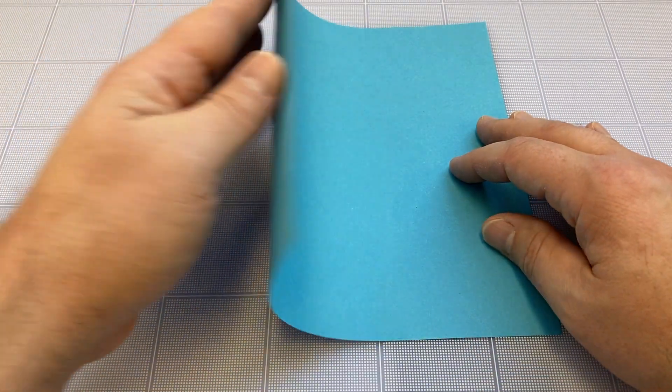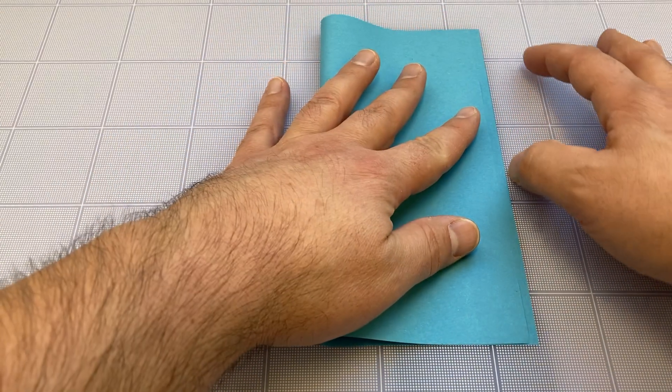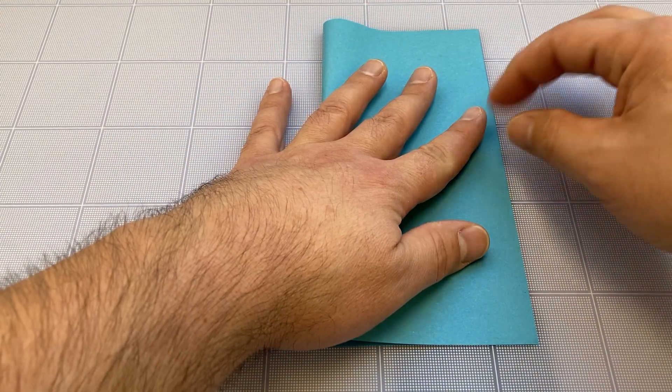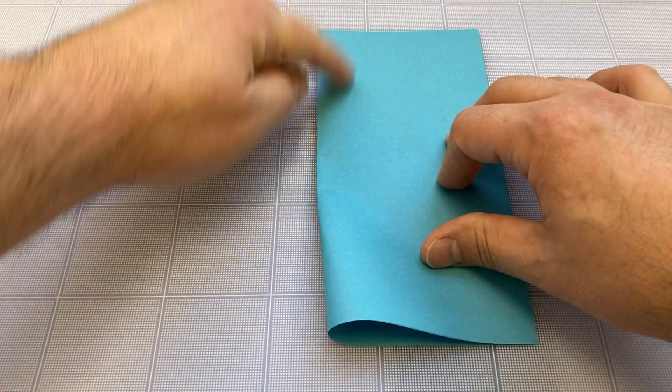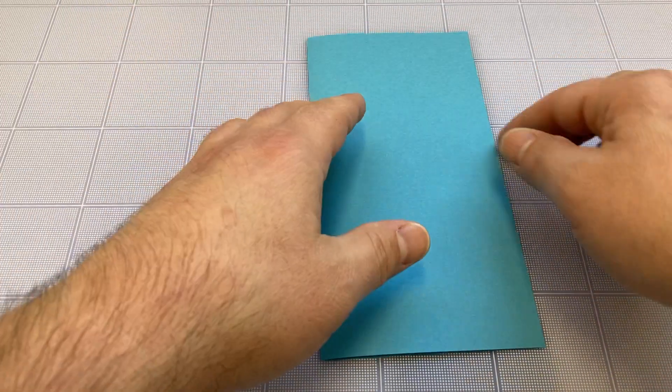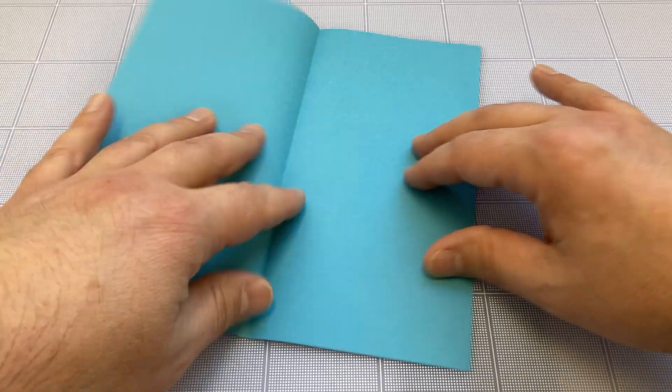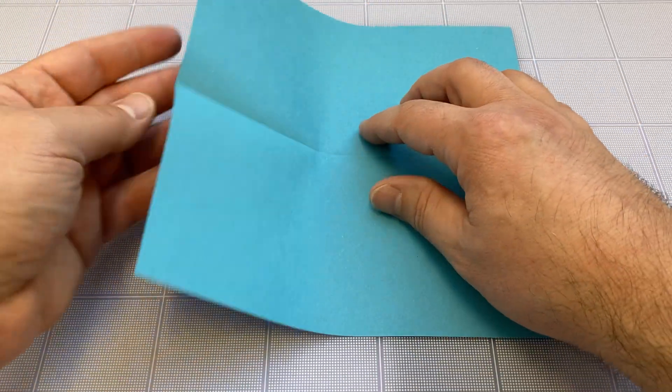Take the left edge and fold it over to meet the right edge, then crease that. Open it up and rotate it 90 degrees and do the same thing.